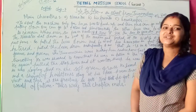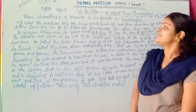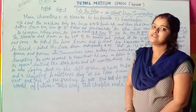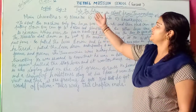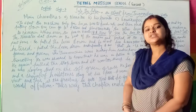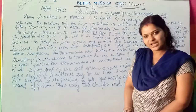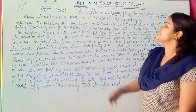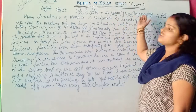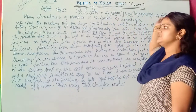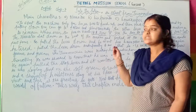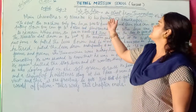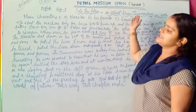Very good morning to all of you. Today I would like to introduce the next half of Chapter 7, 'Into the Future,' from the English book for Class 5. As we have already discussed, this chapter has been taken from the extract 'Time Machine' written by H.G. Wells. The main characters here are the narrator, his friends, and the housekeeper.